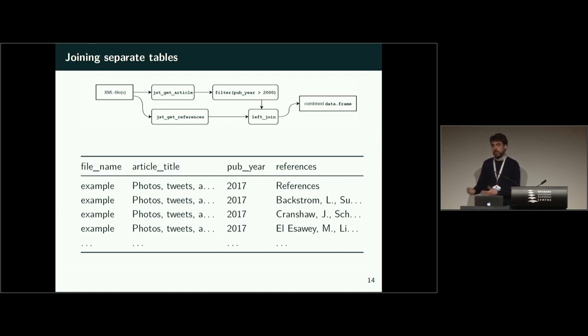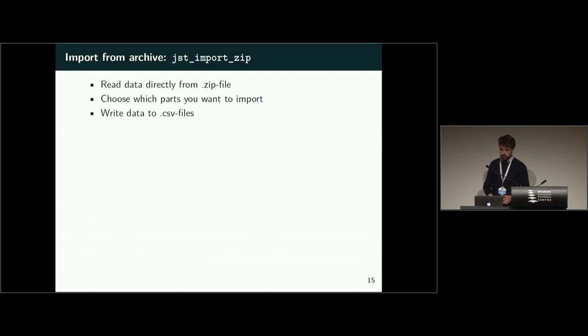Of course, you're going to analyze many articles and possibly not single ones, so we need a way to import a bunch of them. And there are a few possibilities, one of which I'm showing here, which is the function JSTOR_import_zip, which lets you read the data directly from the zip archive, so you don't have to extract it beforehand. You can choose which parts of the archive you want to import, and the output of the function is that it simply writes the results as a CSV file to your disk.